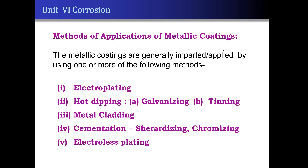Let us see how these metallic coatings are applied on the surface of base metal. There are different methods like electroplating, hot dipping — which includes galvanizing and tinning — then metal cladding, cementation, and electroless plating. In today's video, we will confine ourselves to electroplating.